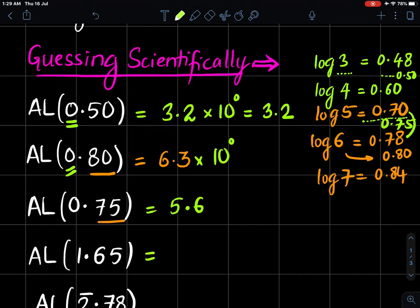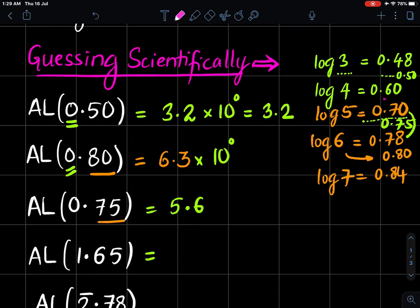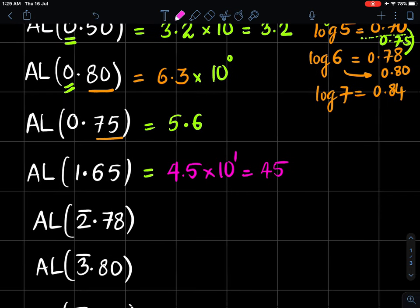Then 1.65. By this time, you should have realized 0.65 is the exact half. So it should be 4.5 into 10 to the power 1. That means it should be 45.